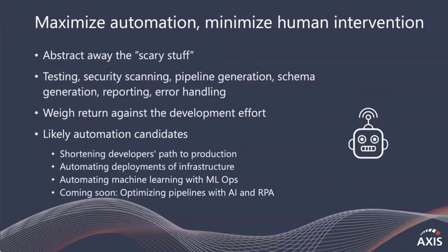The next principle that aligns well with our most successful clients is to maximize automation and minimize human intervention. Humans are great at a lot of things, but not at certain tasks when you get to that level of repeatable detail. Modern data architecture recognizes this and should remove as much cognitive load as possible from people doing the same thing over and over again through automation. You should abstract and automate away as much of the complex, scary stuff as possible. This is an overarching theme for modern data architecture and an unambiguous trend in the field. Things that make a lot of sense to automate include testing, security scanning, pipeline generation, schema generation, reporting, and error handling. Not everything can or should be automated — you have to weigh the return against the development effort — but try to begin with those likely automation candidates.